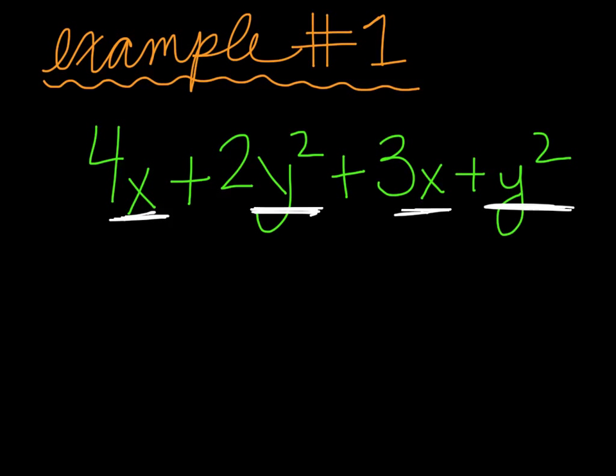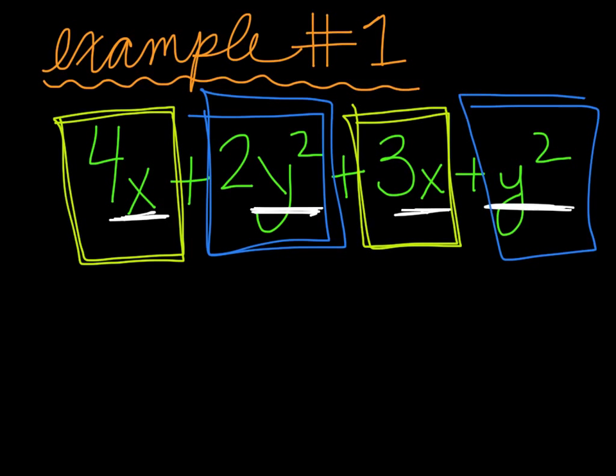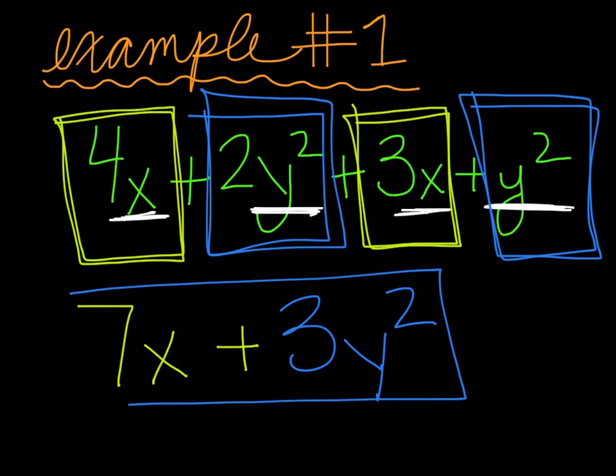I'm going to color code again. All of my x terms, I'm going to put a yellow box around. And all of my y squared terms, I'm going to put a blue box around. Here's my x terms and here's my y squared terms. Let's add the stuff that has the same color, like terms, things that are similar together. My x terms, they're both in yellow boxes. I have 4x's and 3x's. If we add those together, that's 7x's. And if we add the y squared terms together, we have 2y squared plus just y squared, so that's 1y squared, which would give me 3y squared. That would be my final answer or final expression after I've combined like terms.